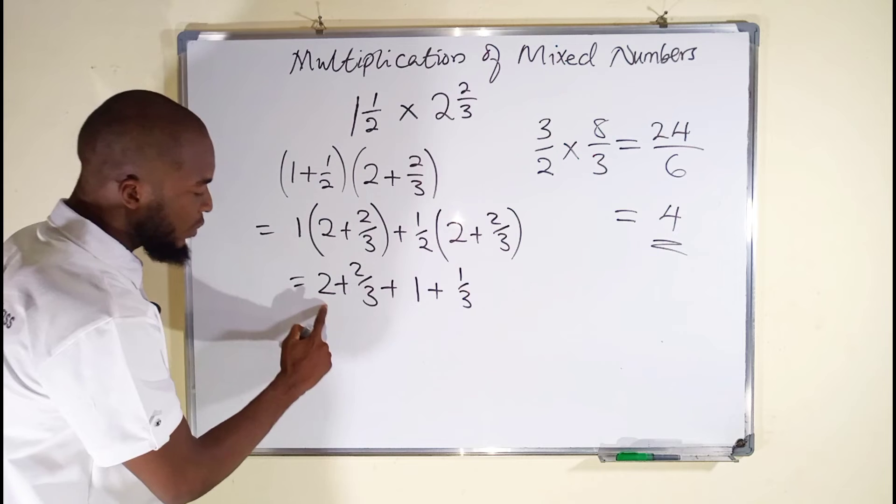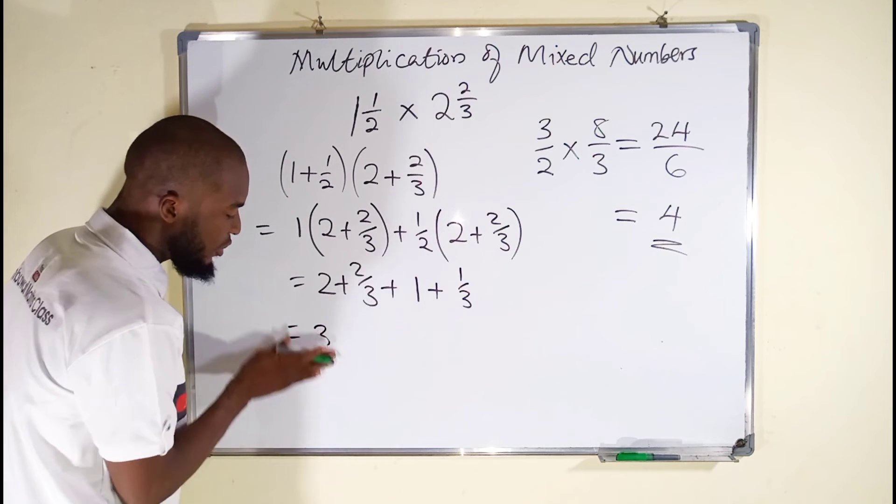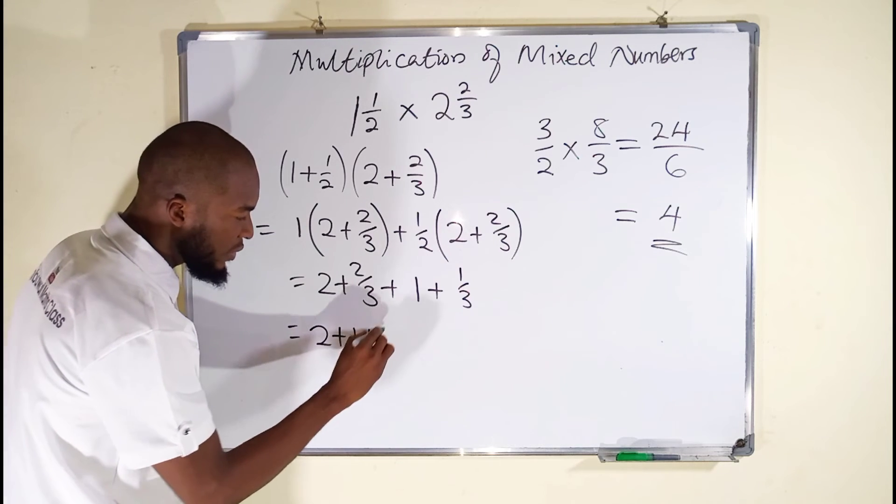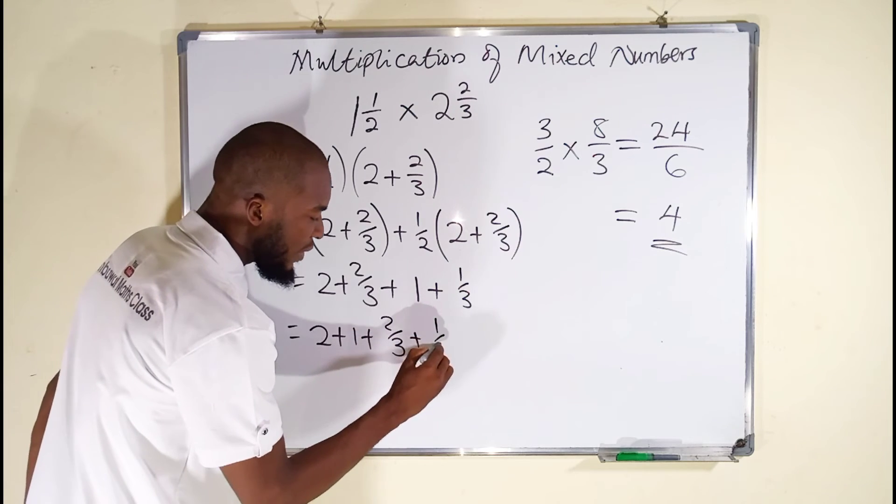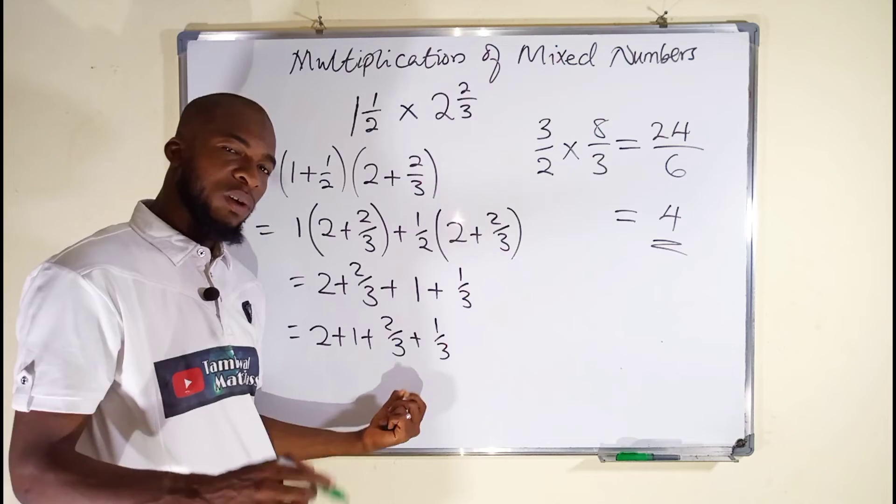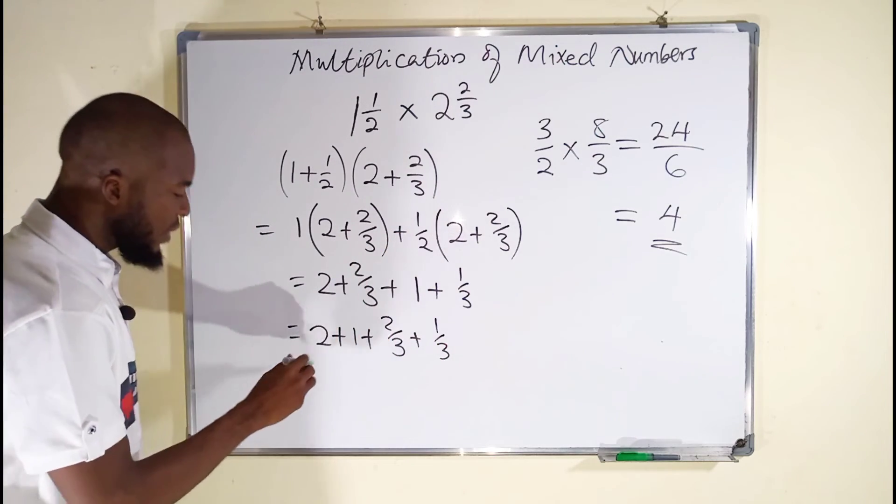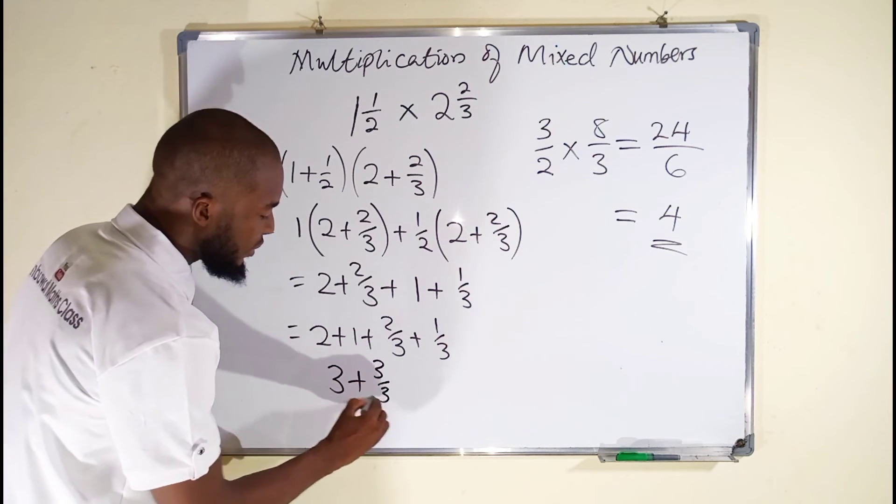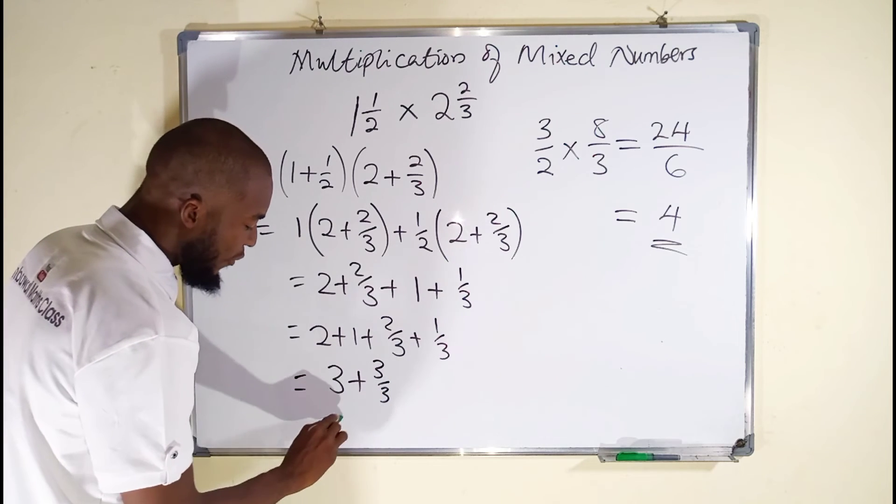We collect the like terms. You can see we have 2 plus 1 is 3. Let me just do it like this: 2 plus 1, then plus 2 over 3, then plus 1 over 3. These fractions have the same denominator. Once you have the same denominator, you are free to add the numerators together. This is 3 plus 3 over 3, and you know 3 over 3 is the same thing as 1, and 3 plus 1 is 4.